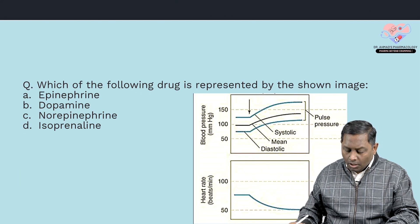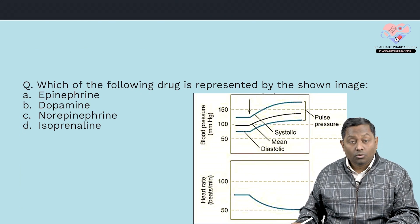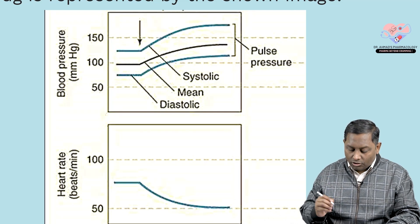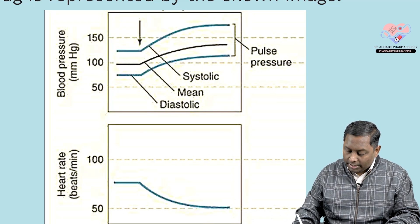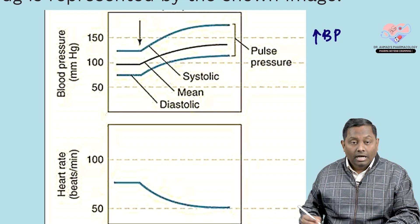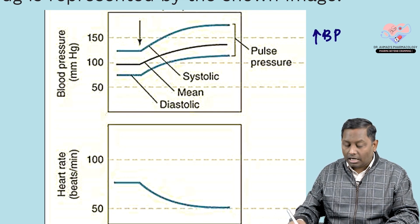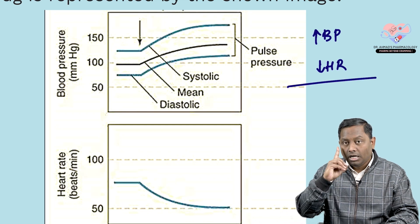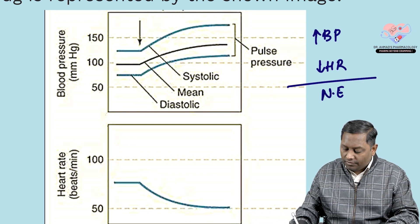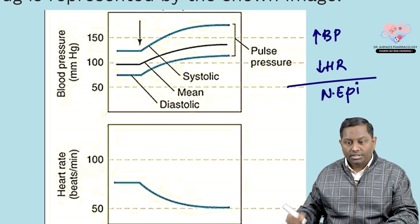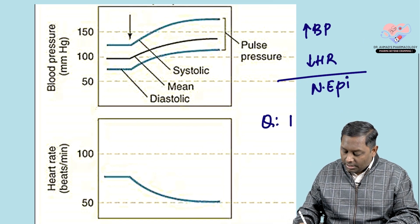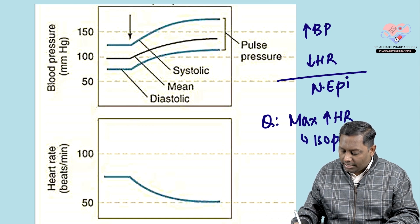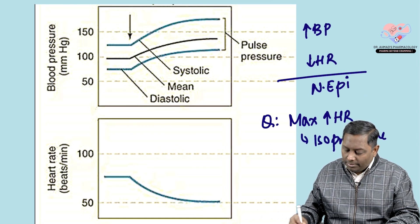Third question: which drug is represented by the shown image? Among sympathomimetic drugs, the drug that increases blood pressure but decreases heart rate — the single drug causing this activity — is norepinephrine.